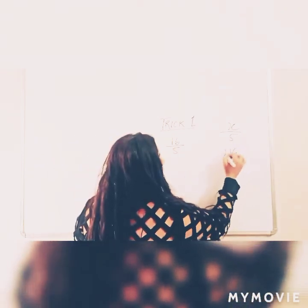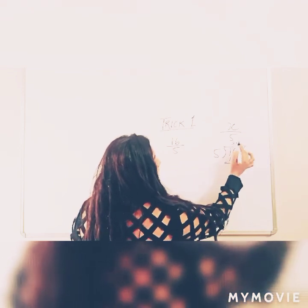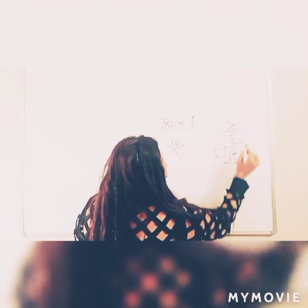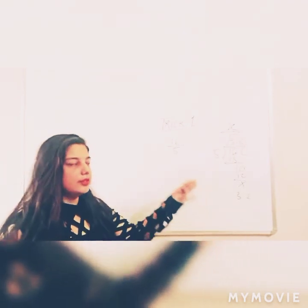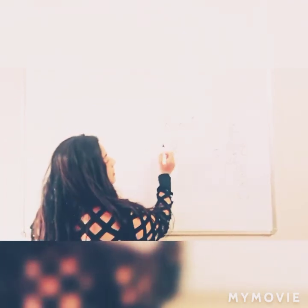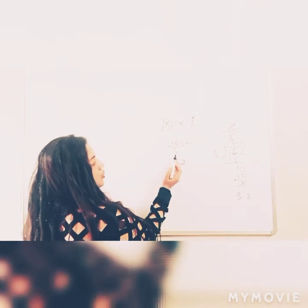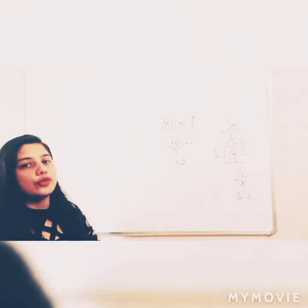I will show you the traditional method first. You write 5 here, 5 into 3 is 15, then you get 1, then you use a decimal, then 0, then 2, giving you 10. So what do you get? 3.2. Now I have a shorter method. What you do is simply multiply the numerator — this is the numerator, this is the denominator — multiply it by 2. 16 into 2 is 32. Now the denominator is a 1-digit number, so put 1 decimal place before it. So 16 divided by 5 is 3.2.